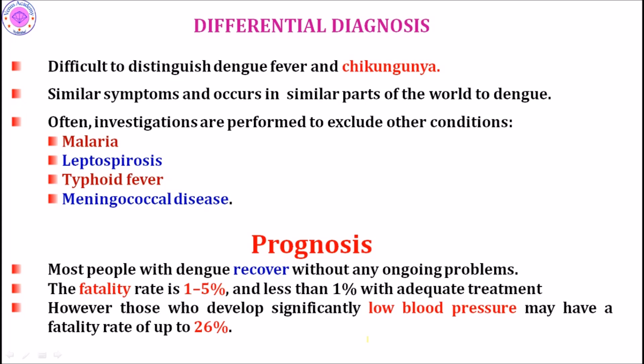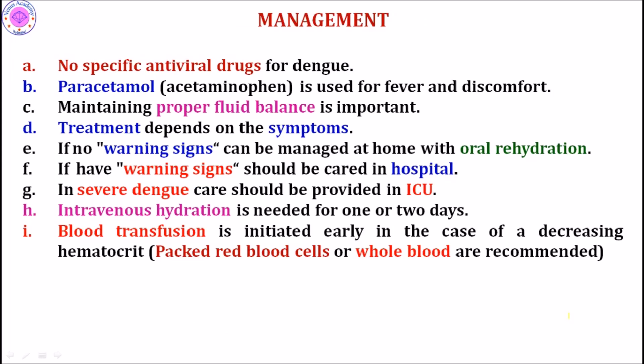Differential diagnosis must rule out chikungunya, malaria, leptospirosis, typhoid fever, and meningococcal disease, as these share similar symptoms. If tests for those diseases are negative, dengue is indicated. Regarding prognosis, most people with dengue recover without ongoing problems, with a mortality rate of about 1–5%. However, patients who develop significantly low blood pressure have a fatality rate as high as 26%.